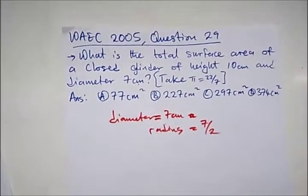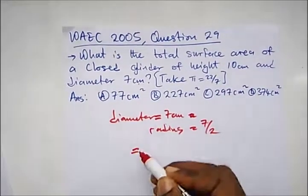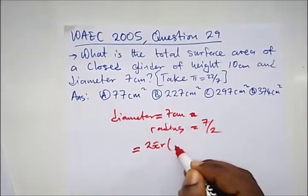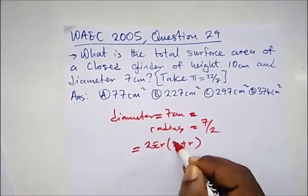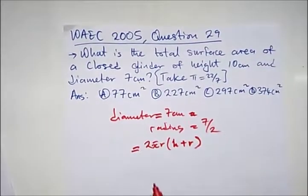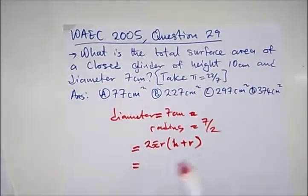What are we told to find? They say the total surface area of a closed cylinder, not opened. So our formula for that of a closed cylinder is 2πr(h + r). Please watch the video on this so that you can understand better.